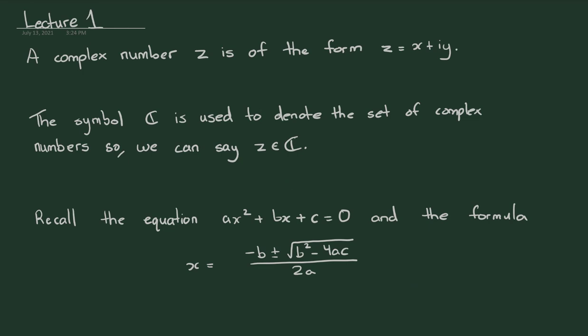A complex number, denoted by z, is of the form z equals x plus iy, where x is a real number and y is also a real number. The symbol i is a very special sort of character used when talking about complex numbers. The symbol C — a fancy C — is used to denote the set of complex numbers. This is similar to how we use R for the real numbers, Q for the rational numbers, and Z for the integers.